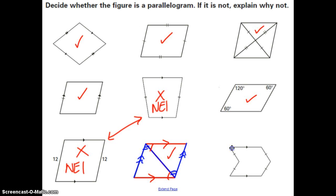This last diagram has six sides. By definition, a parallelogram is a quadrilateral — it has to have four sides — but this one has six, so this is definitely not a parallelogram.